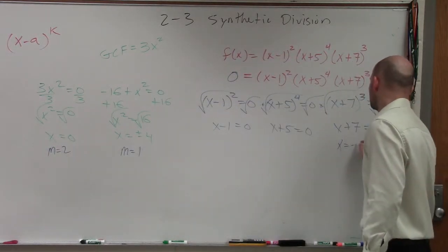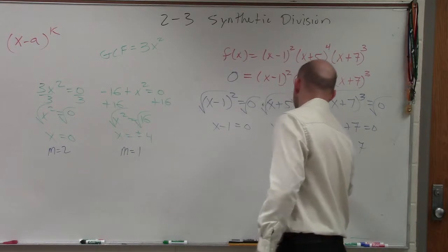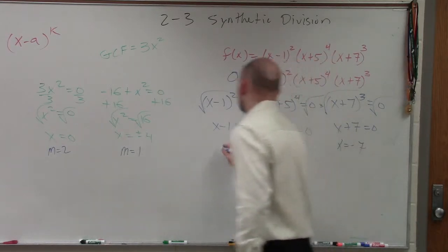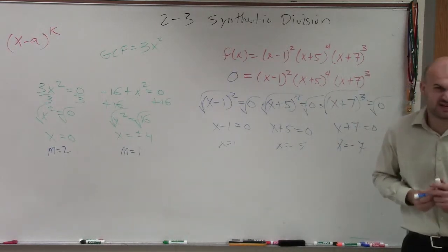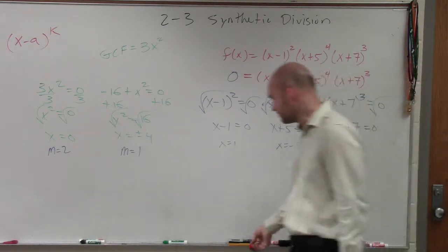Therefore, I can say x equals negative seven, x equals negative five, and x equals one. Does everybody see how I found the zeros? Pretty easy when you already have them factored out. And I know that was a problem, actually, on your homework.